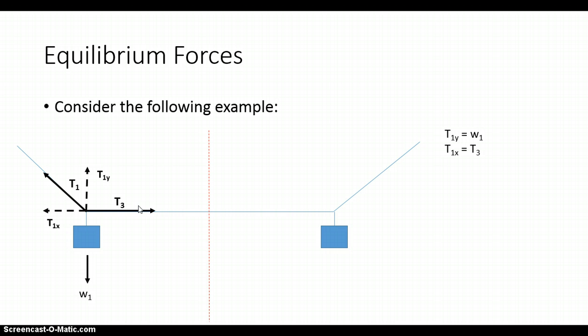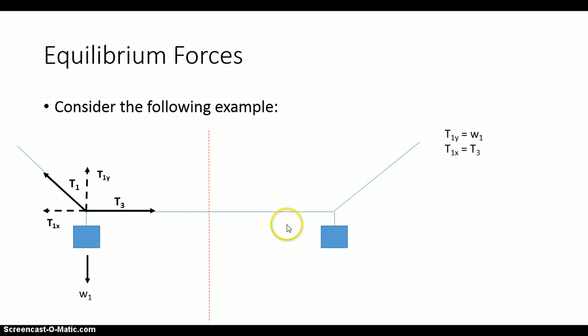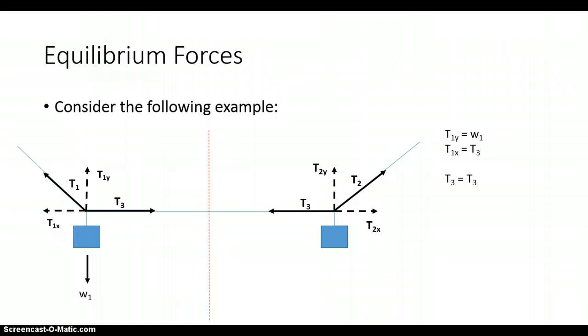Now let's connect this to the forces on the right side. Within the connecting string, T3 has to be equal to the tension pulling on the right side, so these two are equal to each other. We also have tension in this part of the string system, which we'll call T2. T2 has two components because it is not pointing directly up, down, left, or right. So it can be broken into a component in the x direction and a component in the y direction.